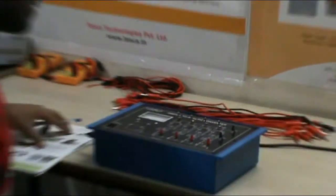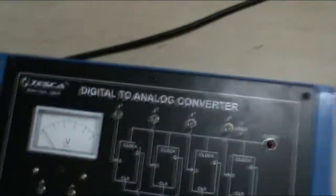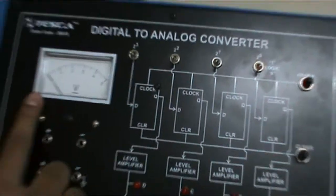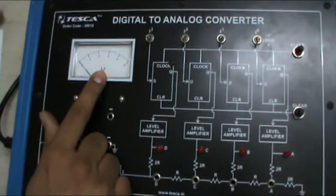Now, this is our equipment. In this, this is the power main on-off switch. This is the voltmeter to display the analog voltage.